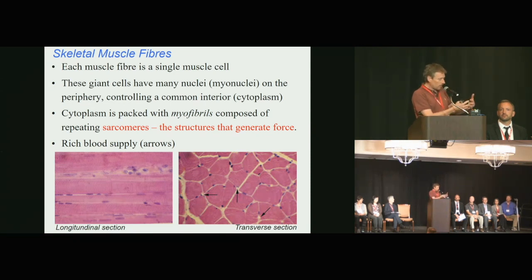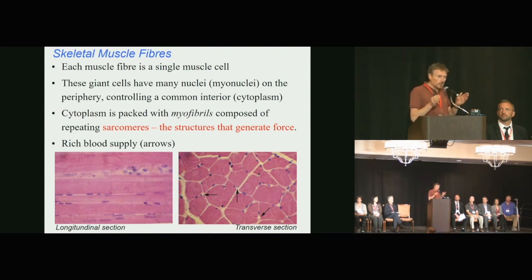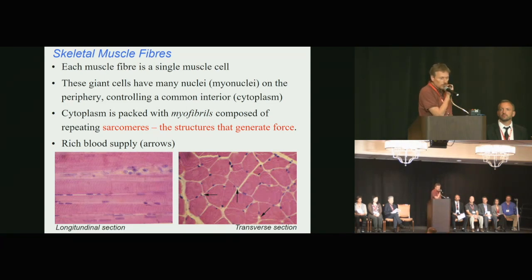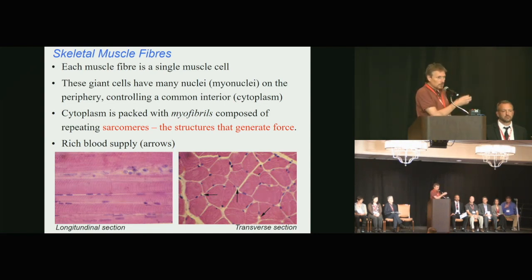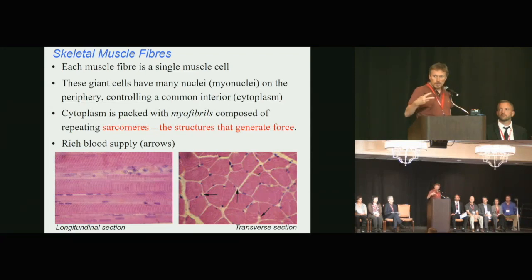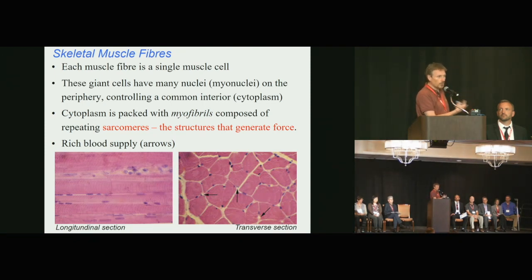Think about interlocking fingers sliding past each other — in sliding past each other, they pull on whatever they're attached to. The muscle gets shorter, you generate force, and that's the movement. Looking along a muscle fiber, you can see it's a long tube with blue dots at the end — those are the nuclei controlling the whole tube.